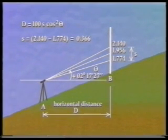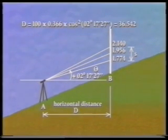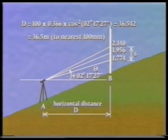Therefore, D is equal to 100 times 0.366 times cos squared 2 degrees 17 minutes 27 seconds, which equals 36.542, which equals 36.5 meters.